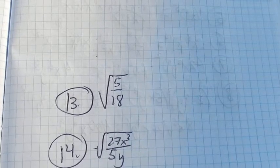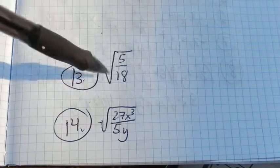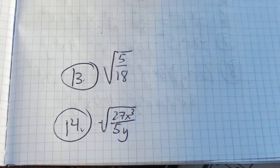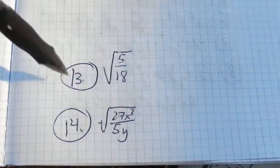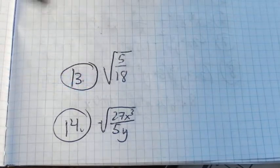The directions for these problems are simplify. When I simplify radicals, my two big pieces are make sure I take out as many squares as I can, do as much squaring as I can, and I can't leave radicals in the denominator.